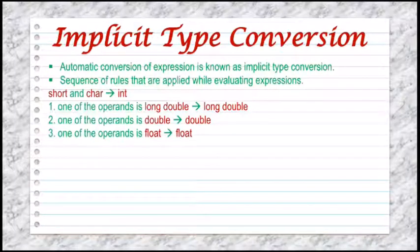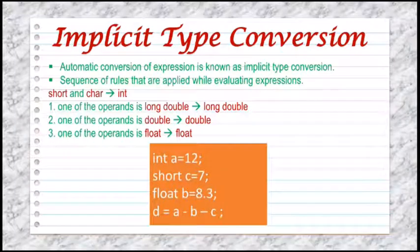Rule three: else if one of the operands is float, the other will be converted to float and the result will be float. In the example, we have declared a as integer, c as short, and b as float. While calculating, because float is present, the answer will be a floating number.